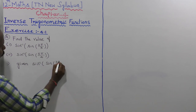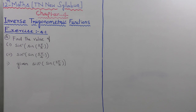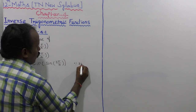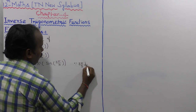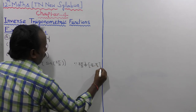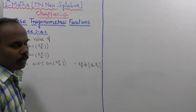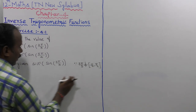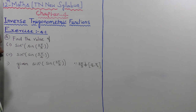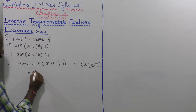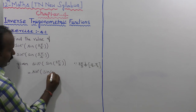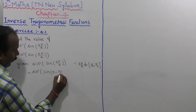Since 2π/3 does not belong to the closed interval [-π/2, π/2], we cannot apply sin⁻¹(sin(x)) = x directly. So we rewrite: sin⁻¹(sin(2π/3)) = sin⁻¹(sin(π - π/3)). Using the identity sin(π - x) = sin(x), this simplifies further.